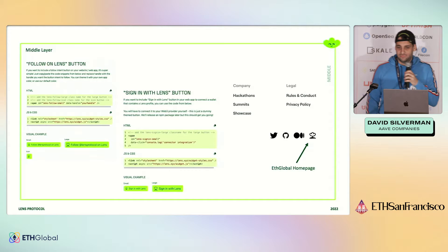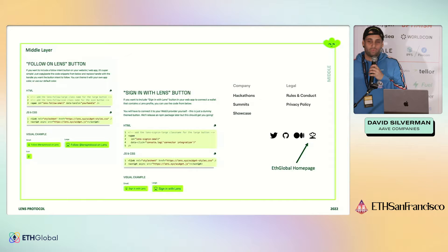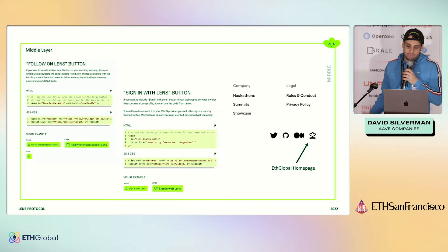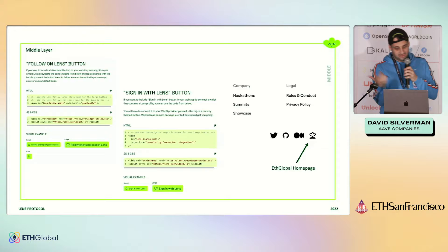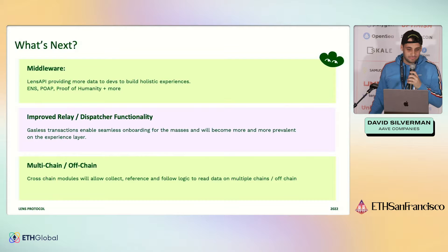Some of the easiest things you can build are a Follow-on-Lens button or a Sign-in-with-Lens button. Sign-in-with-Lens wraps Sign-in-with-Ethereum, so you're still validating that the user owns the address. Additionally, the Lens API will return all the data it has on that user — their Lens data, ENS, POAPs, proof of humanity or WorldCoin status, and more. ETH Global on their homepage has a link to their Lens profile as well as a way to follow them through the Lens API.